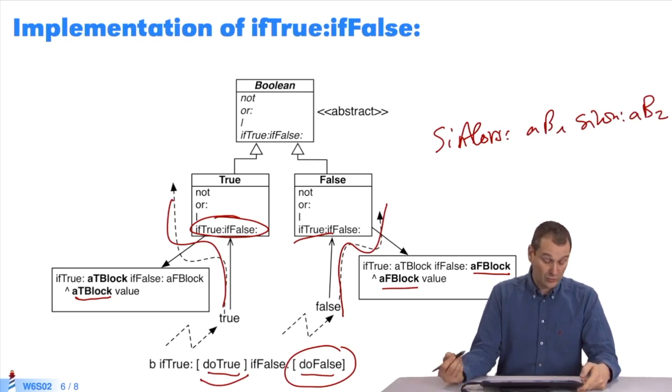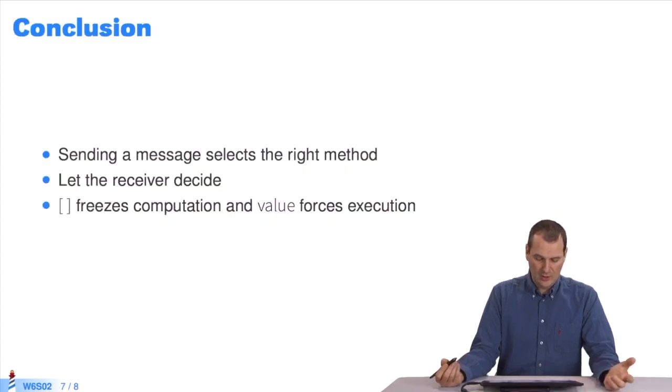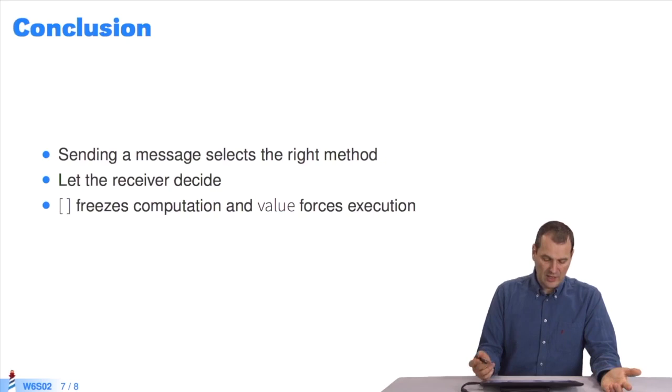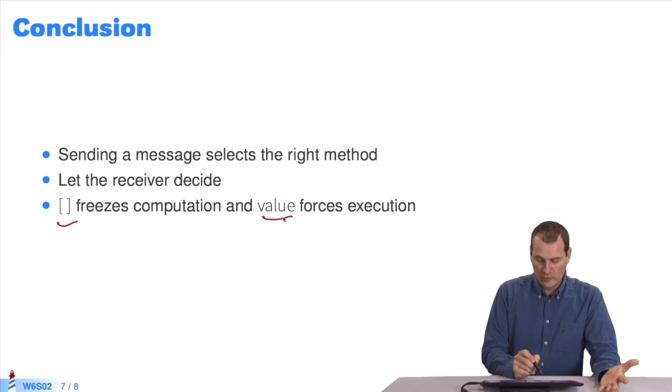So what have we shown with this example? We saw that sending a message selects the right method. Here we decided to let the receiver decide its behavior. And we saw that brackets freeze computation, and that value forces the execution of frozen code.